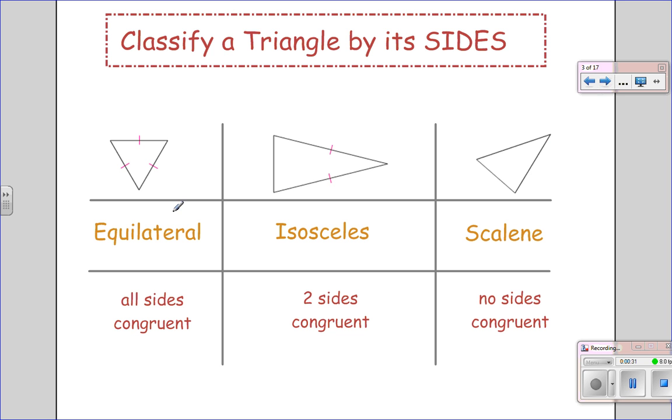By sides, equilateral means all sides are congruent, isosceles means two sides are congruent, and scalene means no sides are congruent. You can name a triangle both by its angles and by its sides.